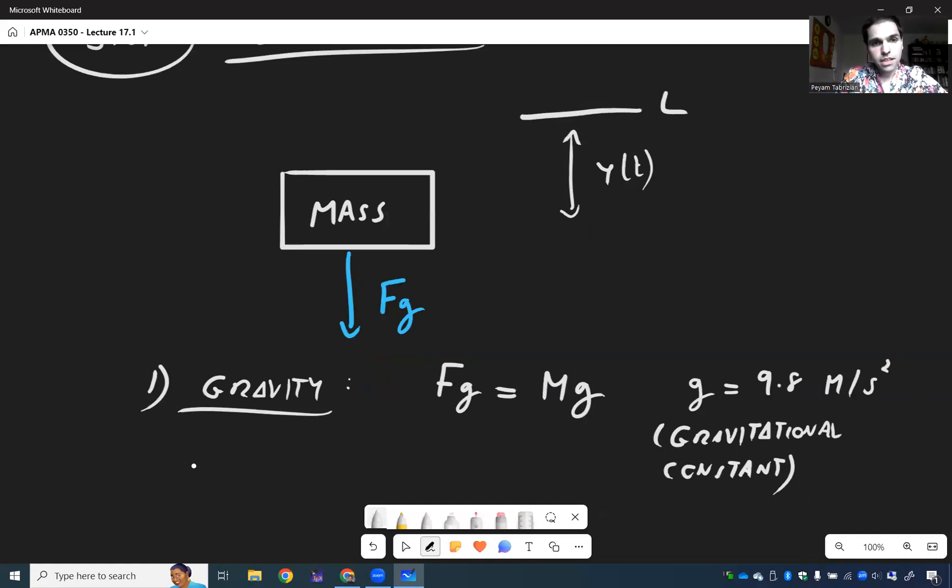On the moon it would be much less. That's one. Then the second force in play is one that pulls this mass up, and that's what's called the spring force, called FS. Because think about it, imagine you have this mass, you pull it down, then there's something that wants to pull it up, kind of to make it bounce back. And that is what's called the spring force.